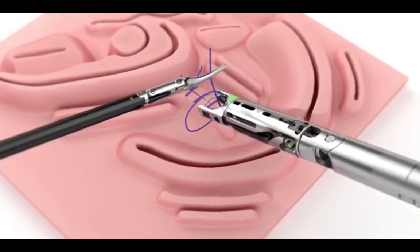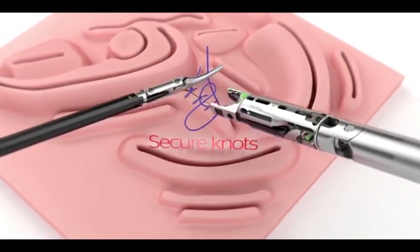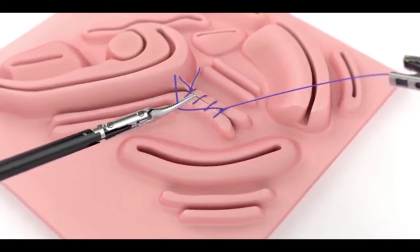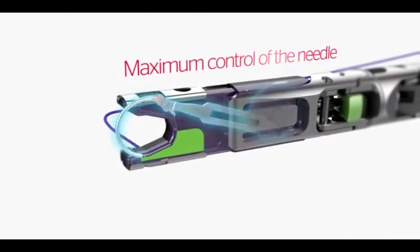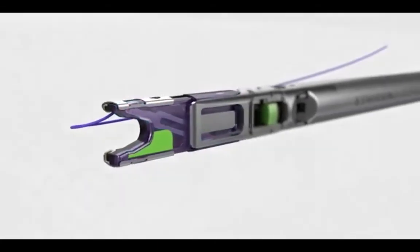ProxyShore enables surgeons to securely tie intracorporeal knots. ProxyShore suture cartridge is designed to maintain control of the needle during suturing, which may reduce the risk of needle loss.